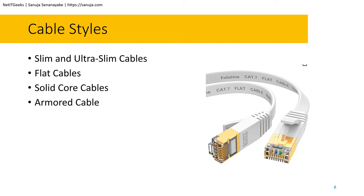For all your patch panel needs, you typically go with stranded core cables, while for infrastructure needs — such as Power over Ethernet runs for access points through ceiling tiles — you use solid core cable. I've already covered this in previous lectures so I won't go into more depth.